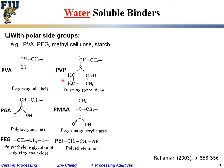PVP has a C=O group. If you compare PVA and PVP, which one has higher water solubility? PVA, because PVP is polar but less polar. PAA — with a COOH acid group as a side group — really likes water. PMAA also likes water but has a CH3 group on the other side. PEG and PEI are all water-soluble binders that people commonly use.